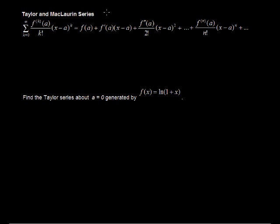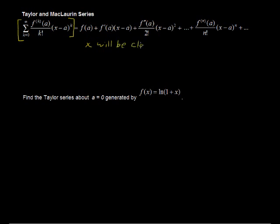In this video I'll walk through an example of finding a Taylor series that can be used to approximate a function near a given value. The Taylor series is expanded as the function evaluated at some given value a, plus the first derivative evaluated at a multiplied by x minus a, where x will be very close to a — a number in the neighborhood of a.